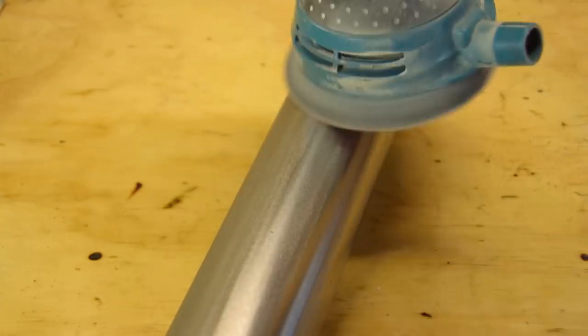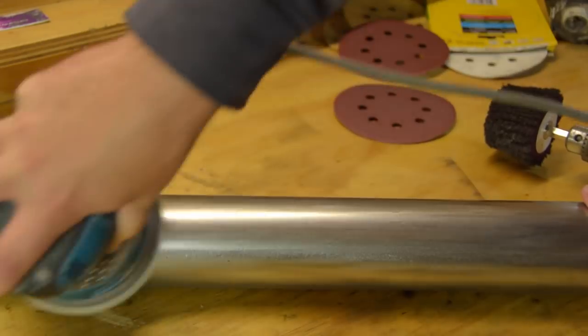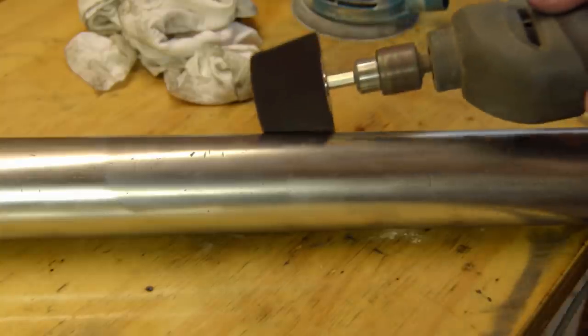I start with an orbital sander 120 grit followed by 240, and then a scotch-brite wheel.